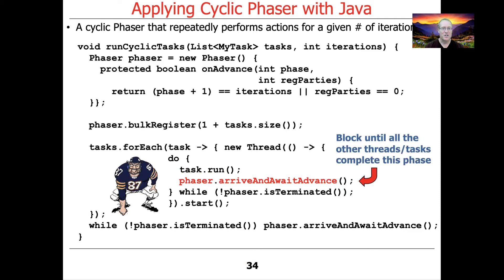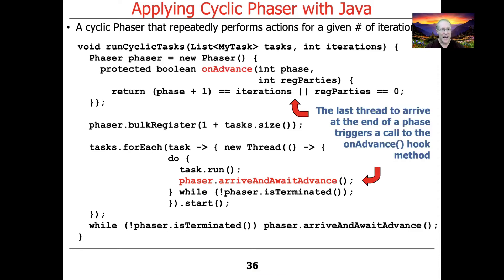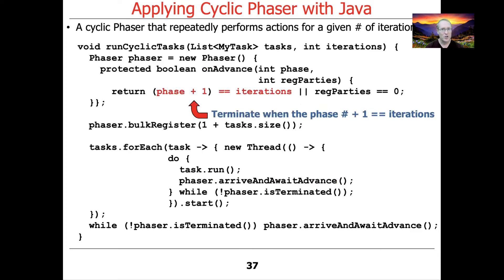After the task finishes running, we use the arriveAndAwaitAdvance method. This blocks until all the other tasks and threads have completed their processing and finished their run. In a sense, this example is using the phaser as a cyclic exit barrier — we do something, then wait for everybody to finish, then decide whether to continue or stop. The last thread to call arriveAndAwaitAdvance at the end of a phase triggers a call to the onAdvance hook method, which runs while all parties are in a dormant state — so we don't have to worry about race conditions. The onAdvance method terminates when the phase number plus one equals the number of iterations.